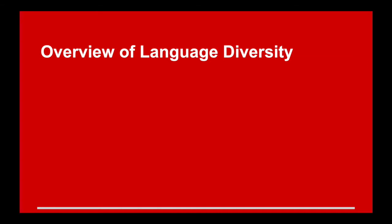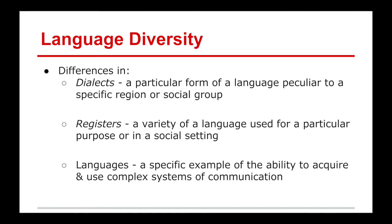We take a pivot and look at language diversity, which is where Otto spends most of the time in Chapter 3. If we view language as the ability to acquire and use complex systems of communication, there are differences in languages, differences in register — which is language use for a particular purpose or in different social settings — and then dialect. If we don't see diversity in specific languages, we see it in dialect: particular forms of language specific to regions or social groups.